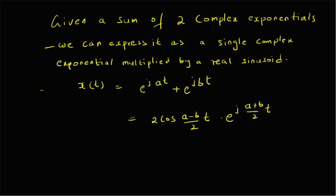So it is a single complex exponential multiplied by a real sinusoid. Let us look at an example. Given the signal x of t equal to e^(j·2t) plus e^(j·3t).